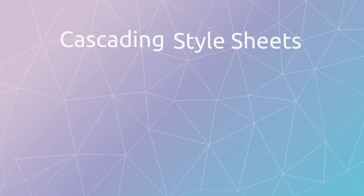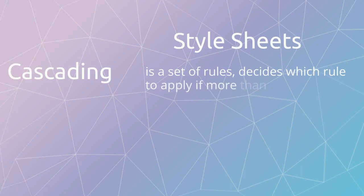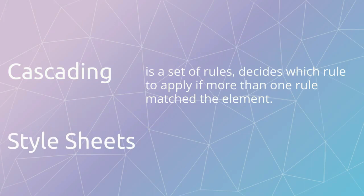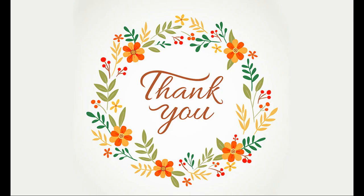To summarize: CSS stands for cascading style sheets, where cascading is a set of rules that decides which rule to apply if more than one rule matches an element. CSS is a style sheet language used to describe the presentation of a document. With this we have finished with the chapter. Thank you.